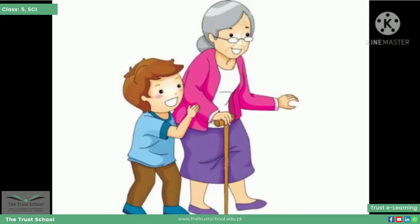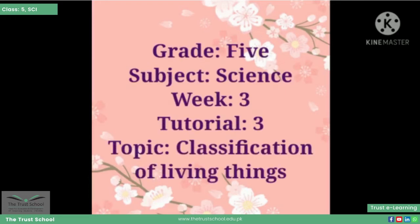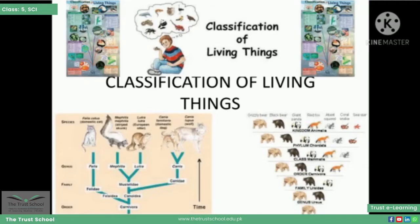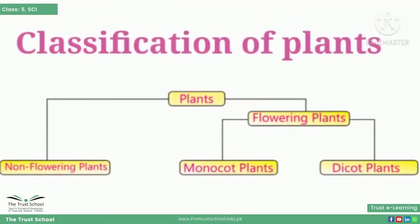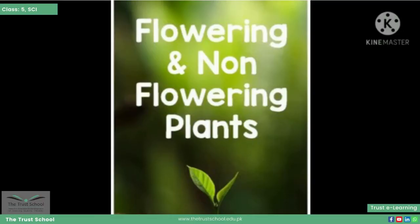This is a tutorial for Grade 5 Science and the topic is classification of living things. In the previous tutorial we discussed about the classification of living things and the five kingdom system. In this tutorial we will discuss about the classification of plants. Plants are divided into two groups: flowering plants and non-flowering plants. Flowering plants are further divided into monocot plants and dicot plants.